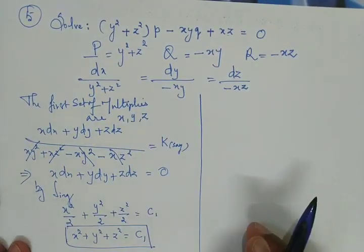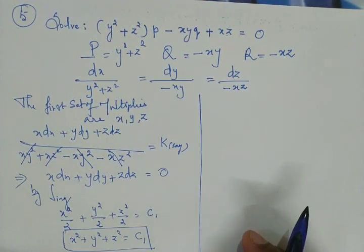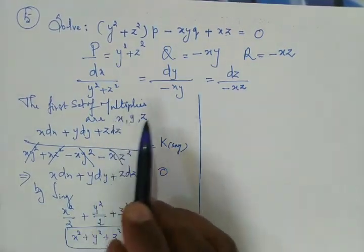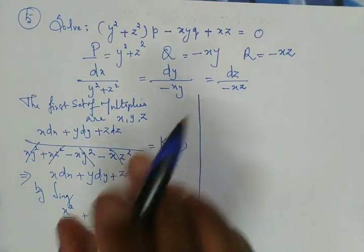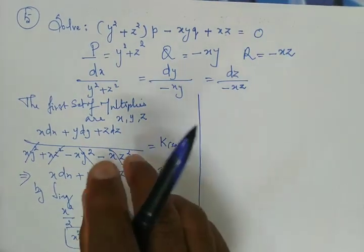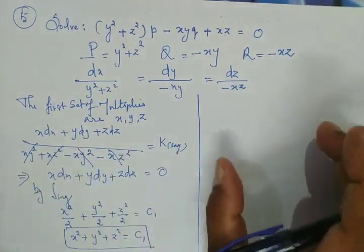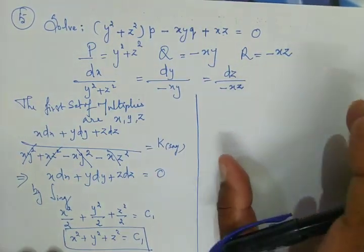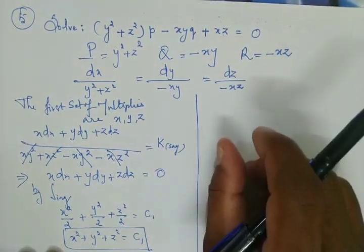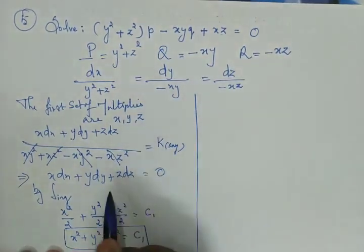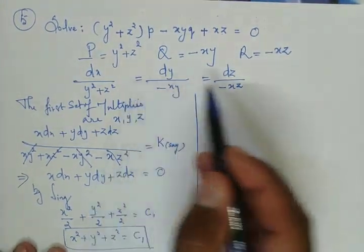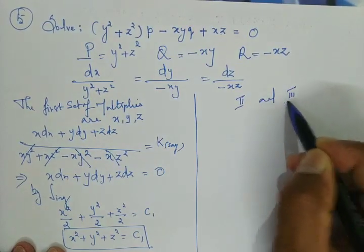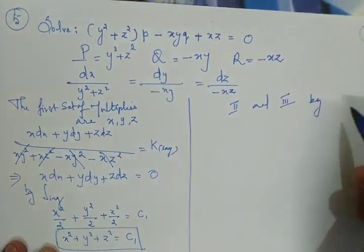For the second part of the solution, we cannot find another set of multipliers in this problem. Instead, we use the method of grouping, considering the second and third parts of the auxiliary equation.